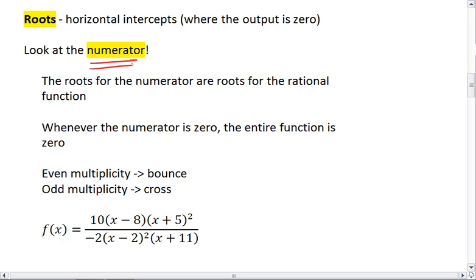The roots for the numerator are the roots for the rational function. We know that if the numerator is zero, then the entire function has to be zero, because zero divided by anything except for zero will be zero. Zero divided by 2 is zero. Zero divided by negative 14 is zero. Zero divided by pi is zero. If zero is in the numerator, then the fraction is zero.